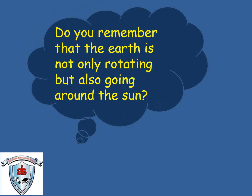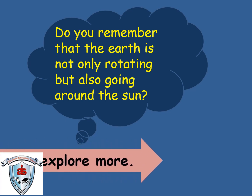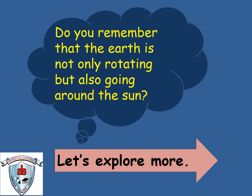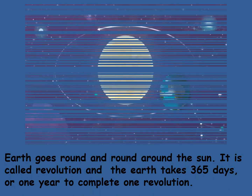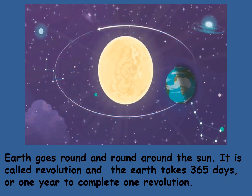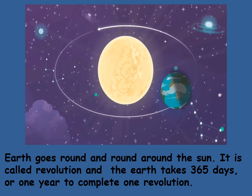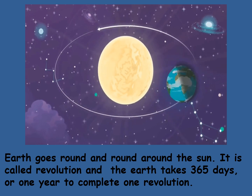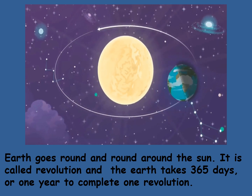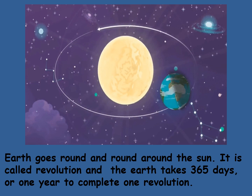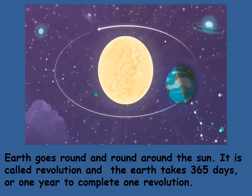Do you remember that the earth is not only rotating, but also going around the sun, children? Do you remember what we call it? Let's explore. Earth goes round and round around the sun. It is called revolution, and the earth takes 365 days or one year to complete one revolution. Yes, in one year there are 365 days.